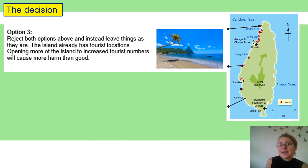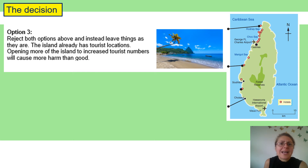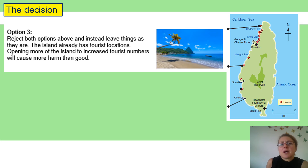Option three is to reject both option one and option two and instead leave things just as they are. The island already has tourist locations opening in the north to increase tourist numbers, and further development will cause more harm than good. But does that really meet the requirements of the government, which is looking to increase tourist numbers on the island? That will be for you to decide.